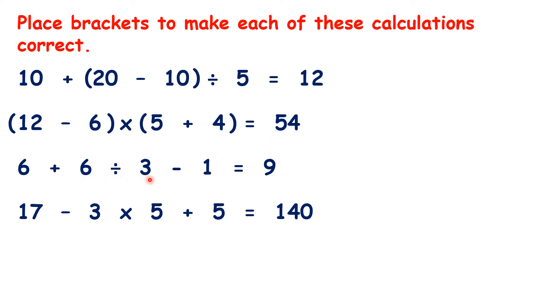Here, we need brackets around 3 minus 1, because that makes 2. Then, because we always do division before addition, we do 6 divided by 2 to get 3, and then we can add that 6 to get our answer of 9.